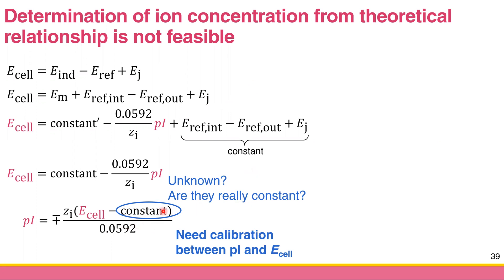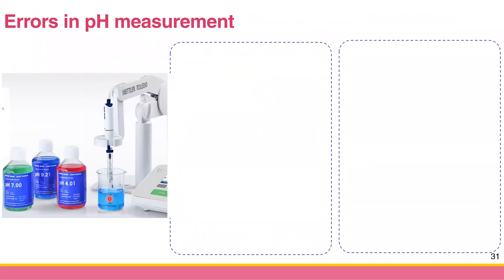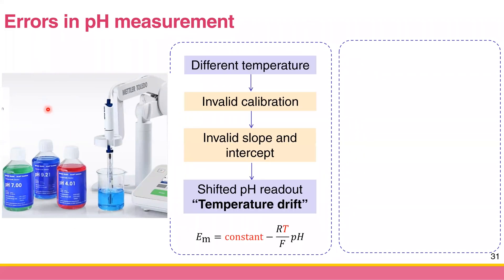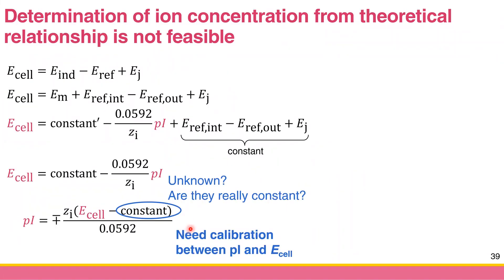In real life, we need to do calibration between the p_ion and the E_cell. This is similar to when we calibrate the pH meter using several constant-standard buffers. To do potentiometry, you need to do calibration: you need a series of known ion concentrations, measure E_cell from each solution, construct the calibration curve, and then use that curve to do quantitative analysis.